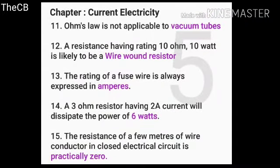Ohm's law is not applicable to vacuum tubes. A resistance having a rating of 10 ohm and 10 watt is likely to be a wire-wound resistor. The rating of a fuse is always expressed in amperes. A 3 ohm resistor having 2 amperes current will dissipate a power of 6 watts. The resistance of a closed short electrical circuit is practically zero.